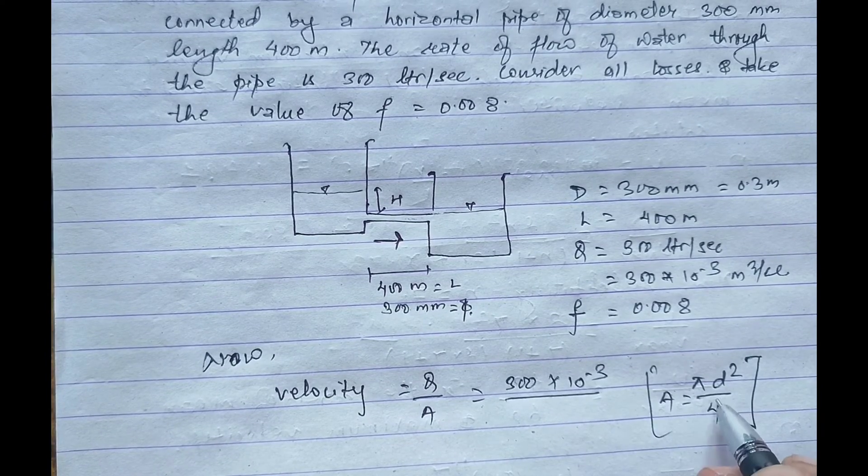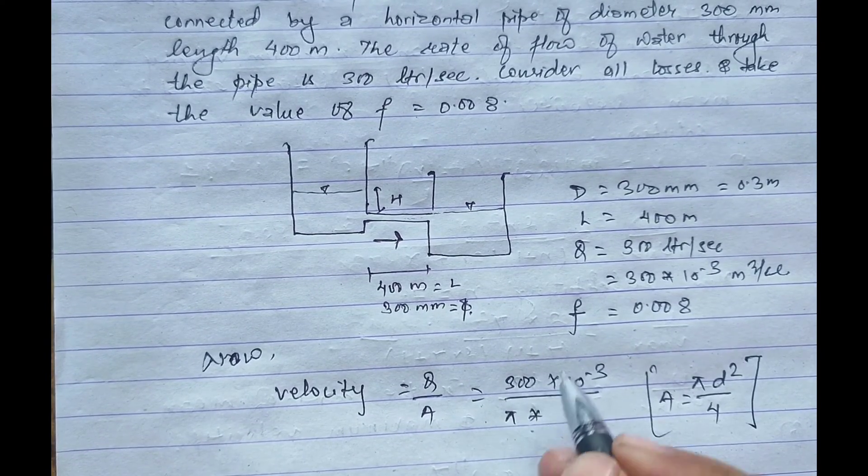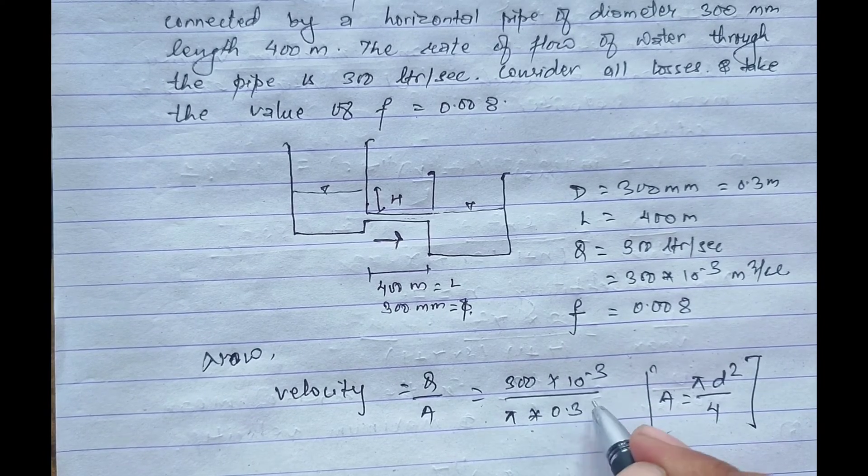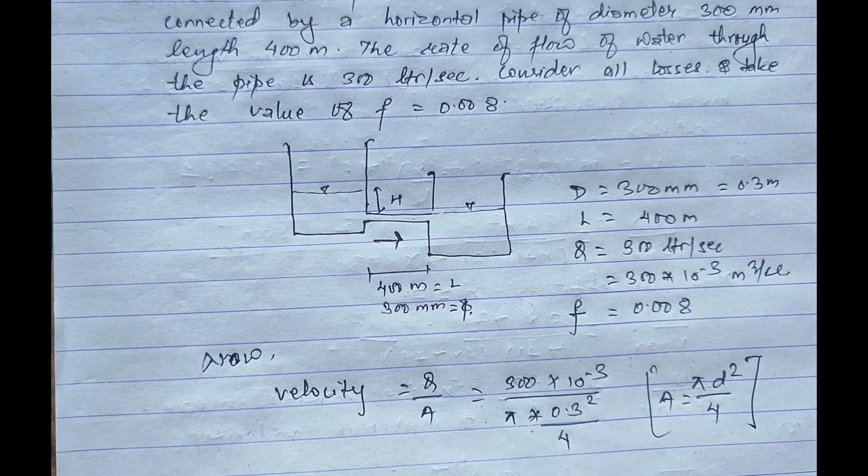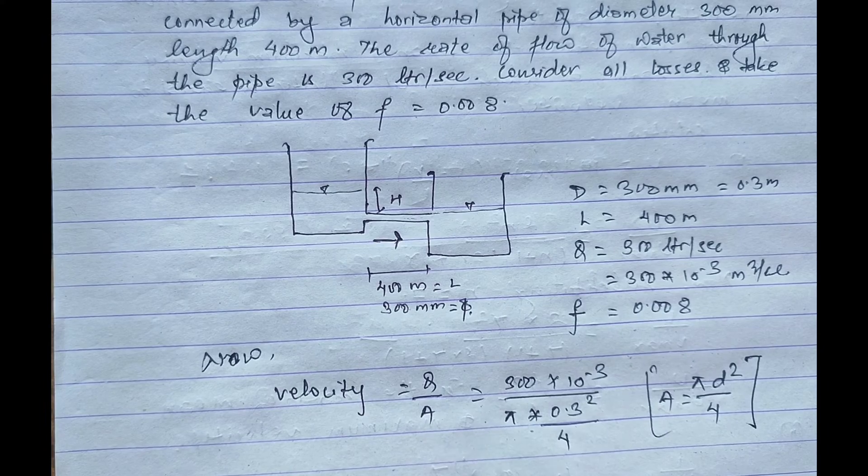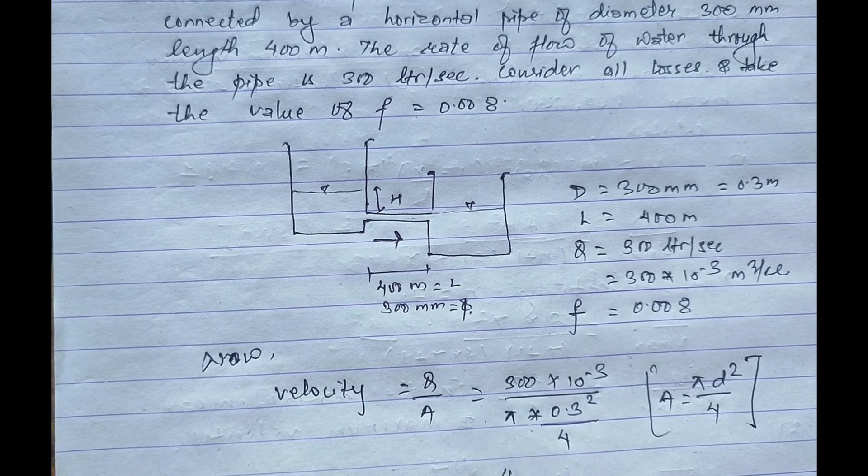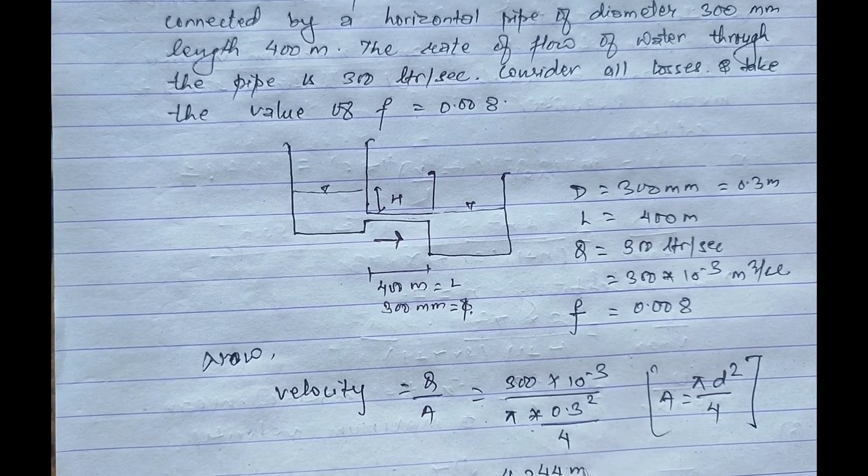And area equals pi d square by 4. This is the formula. On placing this, pi times d is 0.3 square divided by 4. On solving this we'll get 4.244 meter per second.